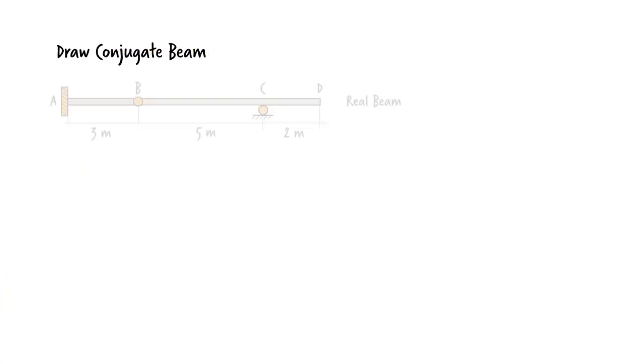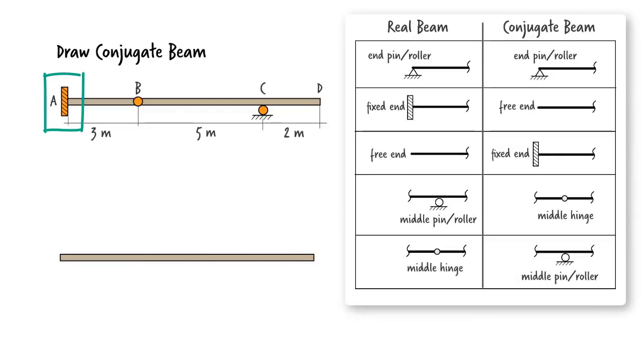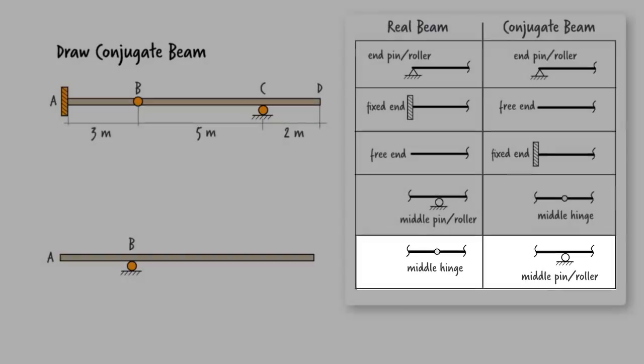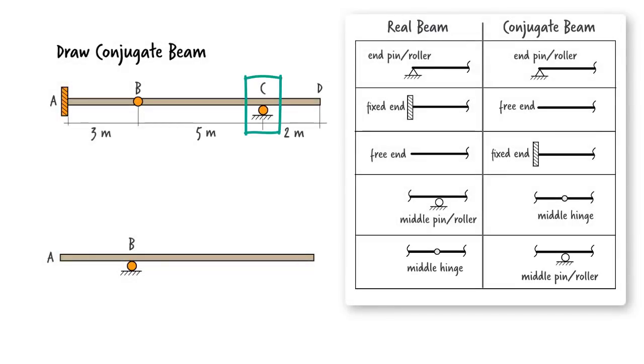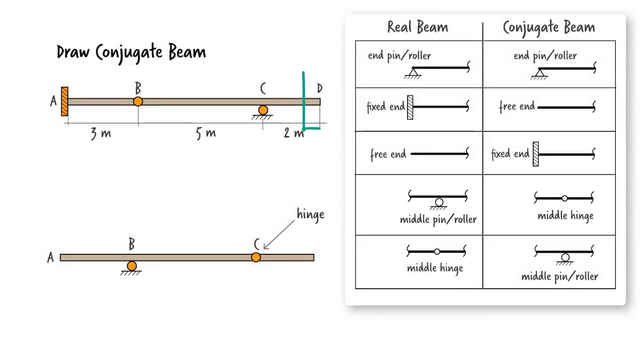Now let's draw the conjugate beam. According to our table, the fixed end at A turns into a free end. The hinge at B becomes a roller. The roller at C turns into an internal hinge. And the free end at D becomes a fixed end.